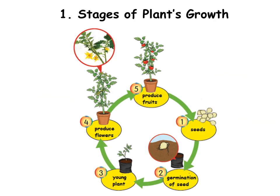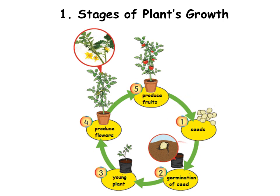Let's look at the stages of plant's growth. First is seeds. When the seeds receive enough water, air, and suitable temperature, then it will grow to the next stage: germination of seeds.